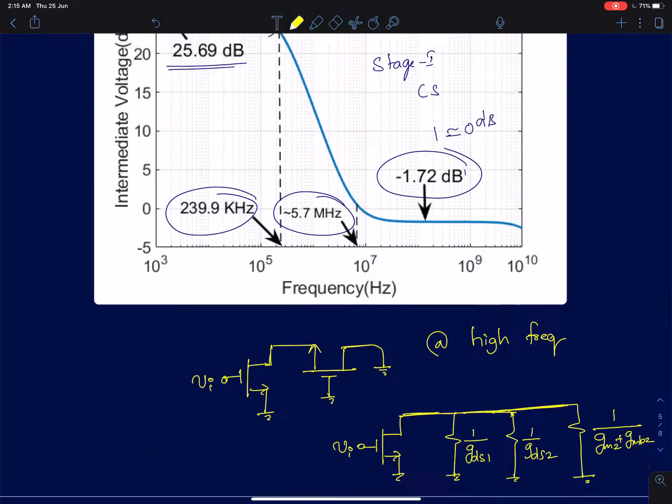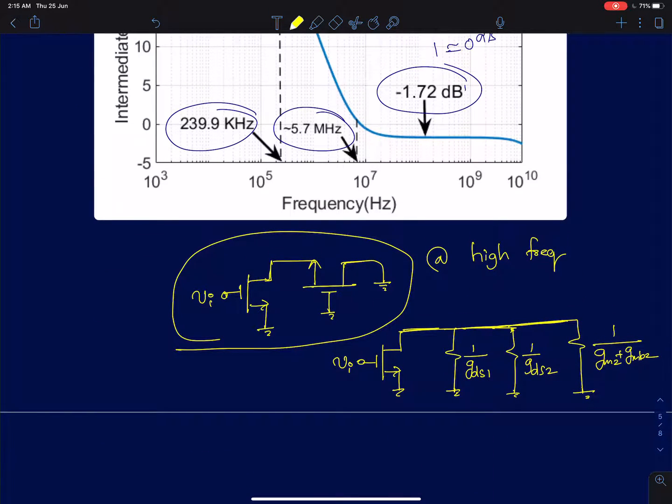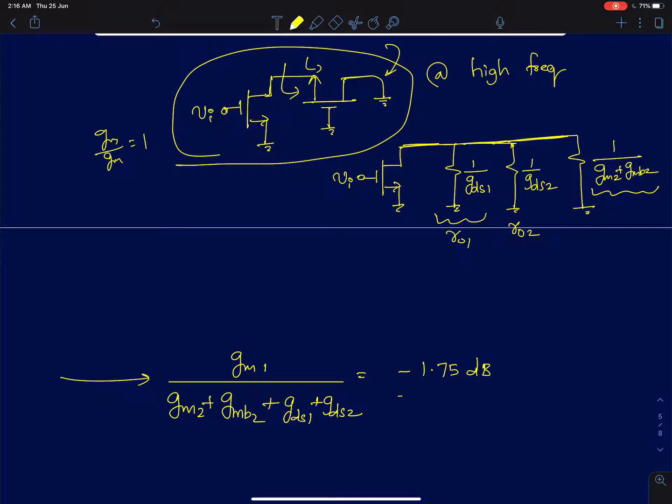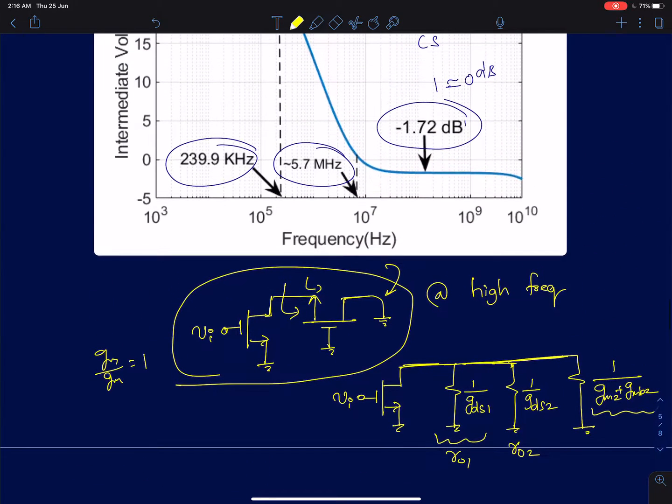Now I'll talk about why is this gain not 0 decibels but instead it's minus 1.72. If you recall in the previous lecture we said that the first stage gain when we analyzed it, at high frequency the capacitor is going to behave like a short circuit. So then the load offered by the second stage is going to be 1 by gm. So that's why we said the gain is approximately 1 by gm by 1 by gm, it's 1. But actually if you take into account the body effect and the gds you'll actually have r01, r02 and 1 by gm plus gmb2. So when you include all of that the DC gain or the high frequency gain happens to be gm1 by the sum of all the other transconductors which is gm2 plus gmb2 plus gds1 plus gds2. And that happens to be minus 1.75 dB. So that's why we see minus 1.75 dB instead of 0 decibels here.